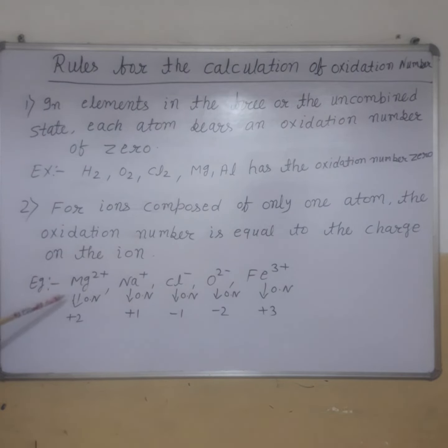For example, Mg²⁺ - magnesium ion has plus 2 charge, so oxidation number is plus 2. Na⁺ has plus 1 charge, oxidation number is plus 1.